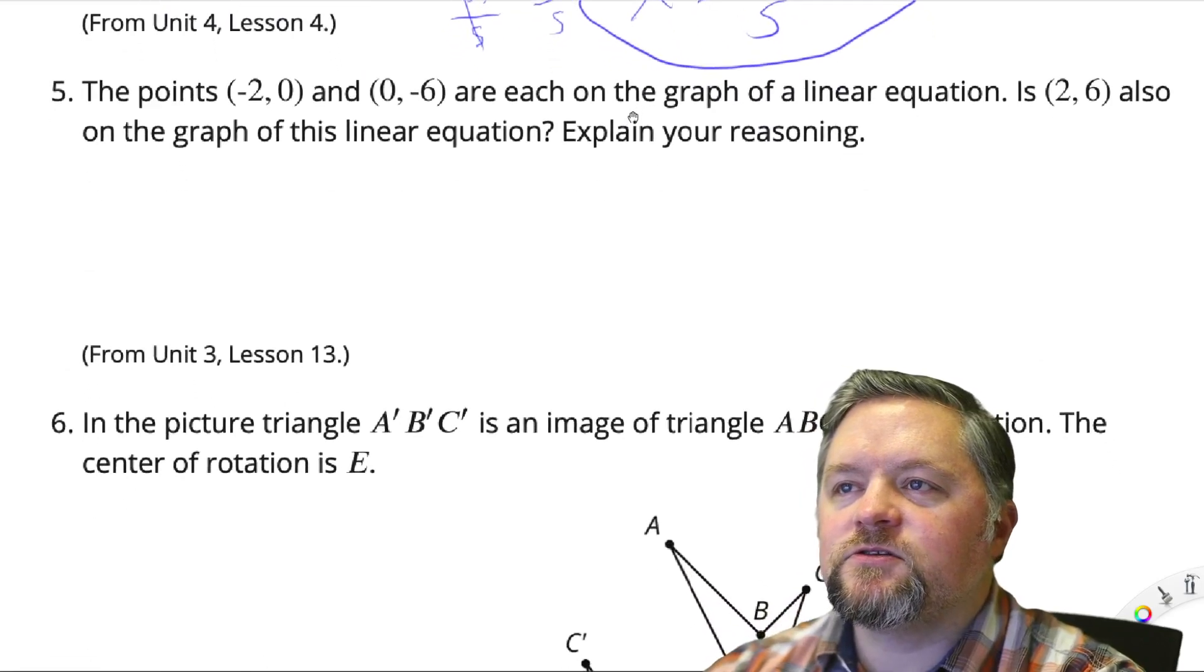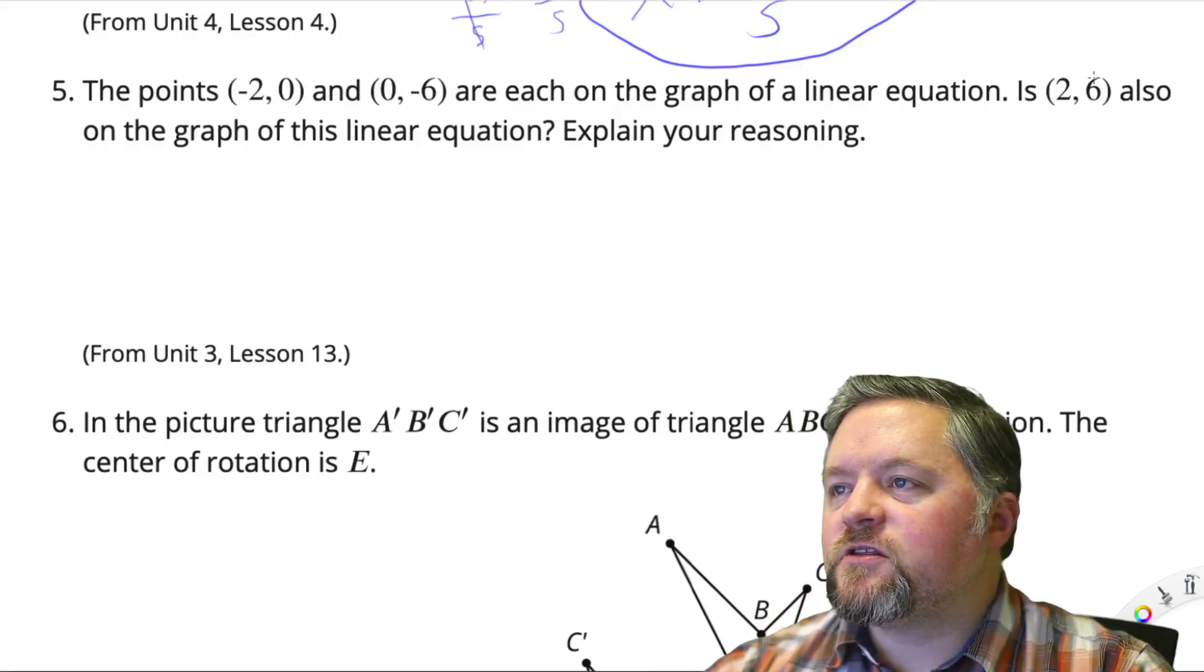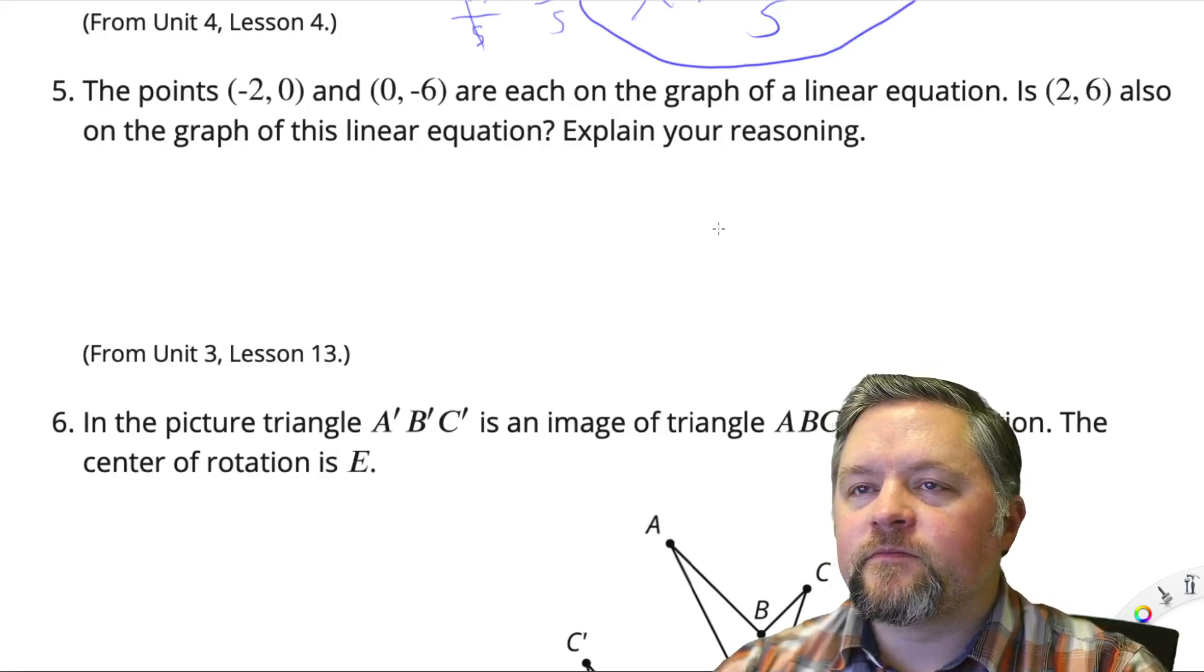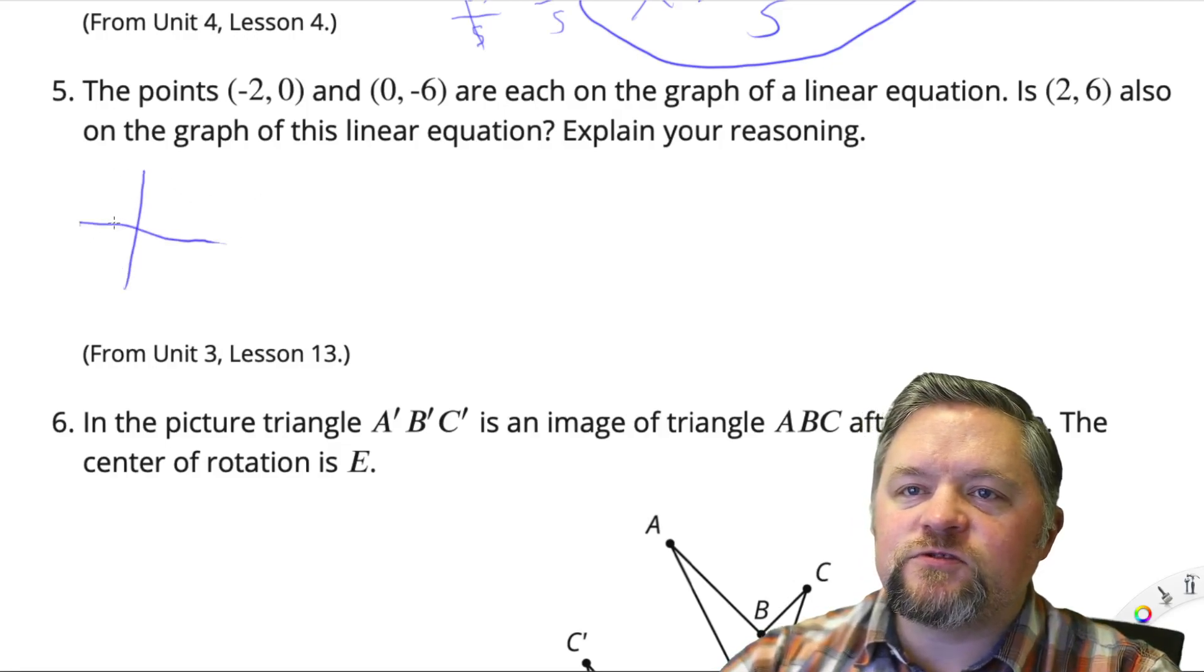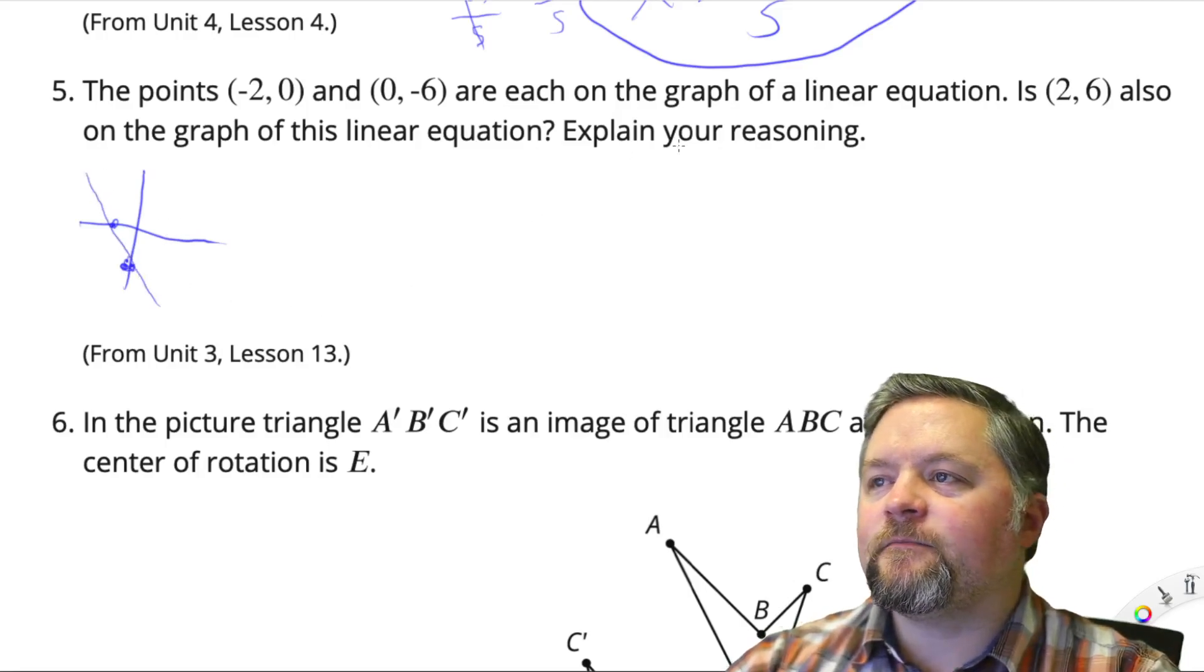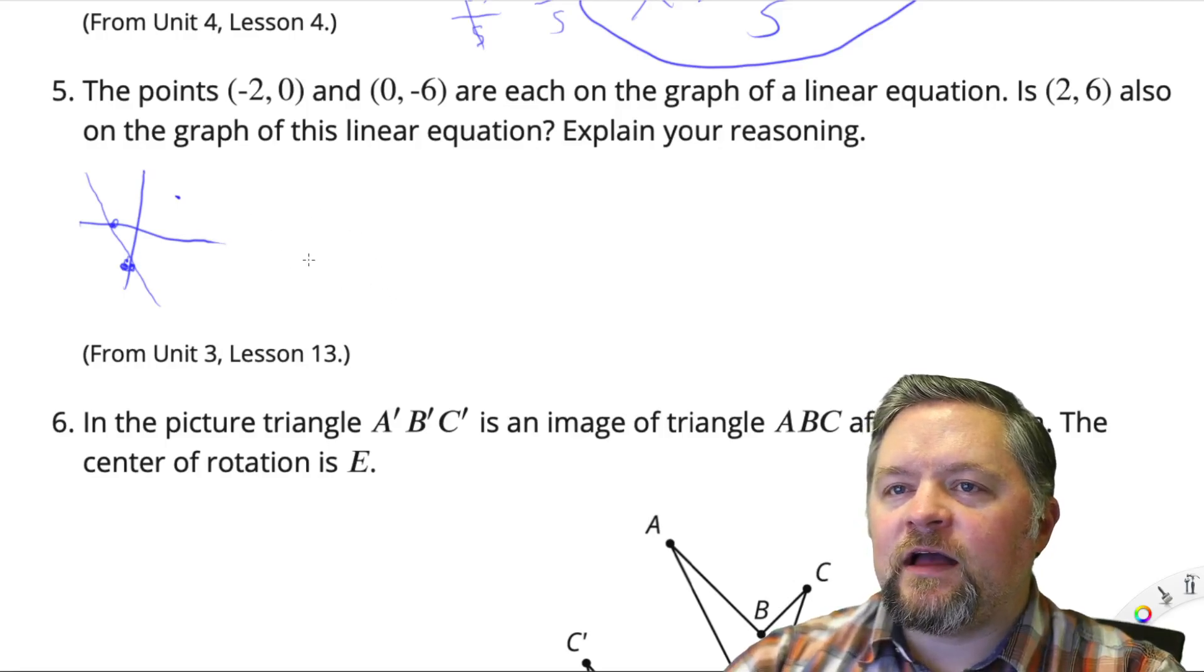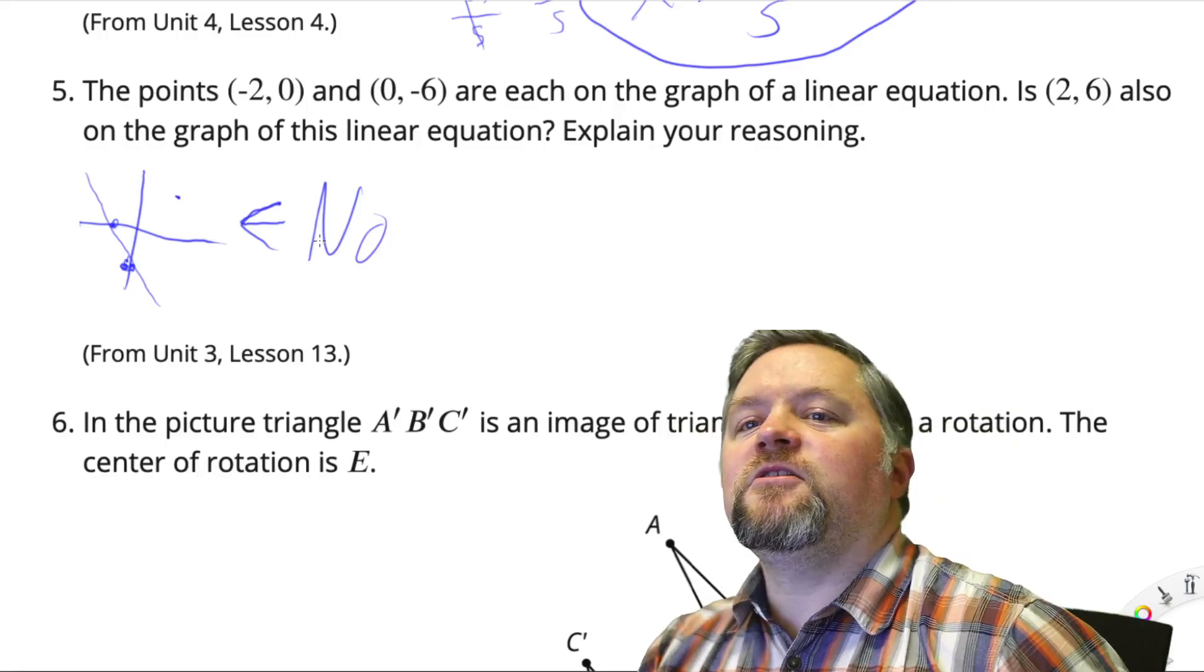Okay, what have we got next? Points on a graph. The points, negative 2, 0 and 0, negative 6, are each on the graph of a linear equation. Is 2, 6 also on the graph of this equation? Explain or show your reasoning. So if I just quickly sketch out this graph. Negative 2, 0 is here. 0, negative 6, is here. Which means our line's going to look kind of like that. Is the point 2, 6 on that graph? No. Explain why? Hey, look at that. It's not anywhere close to where that line is.